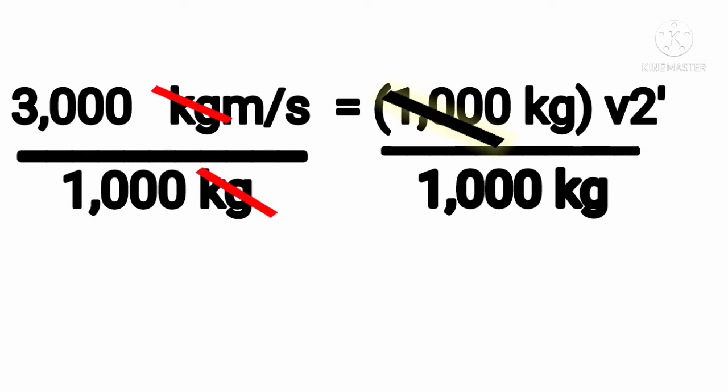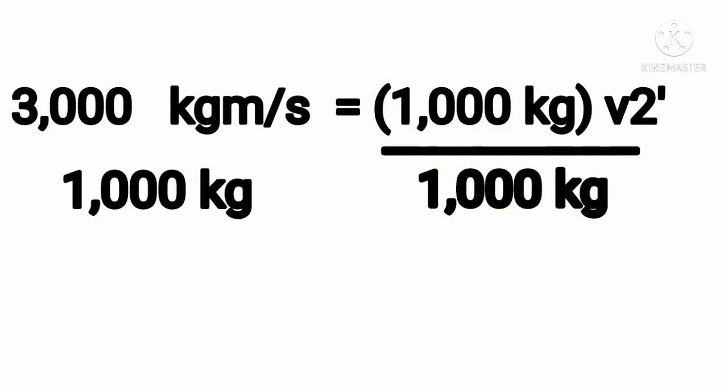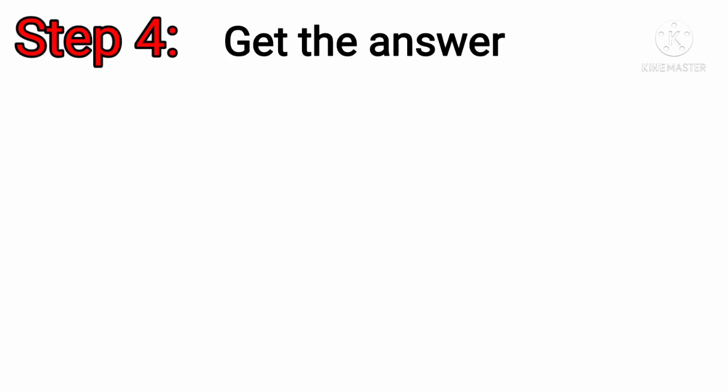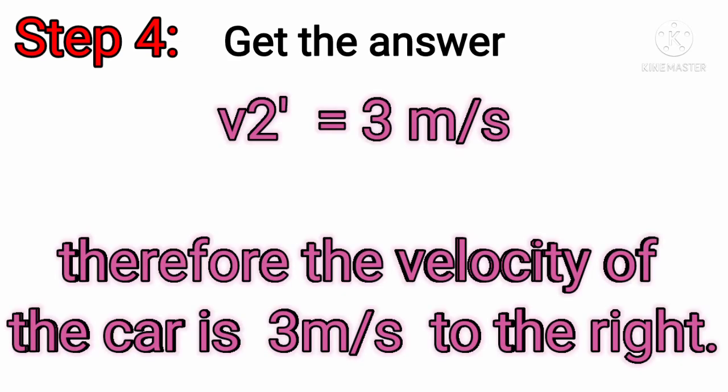Step 4: get the answer. The answer is V sub 2 prime equals 3 m/s. Therefore, the velocity of the second car after collision is 3 m/s to the right.